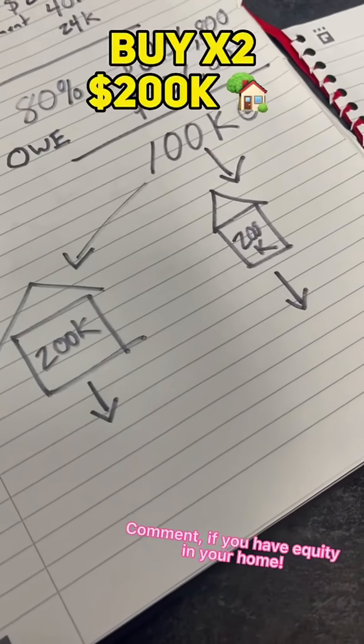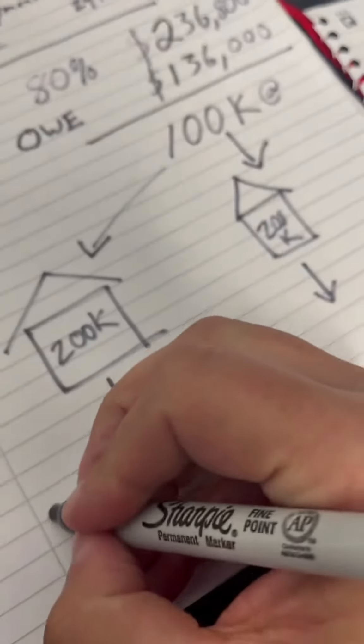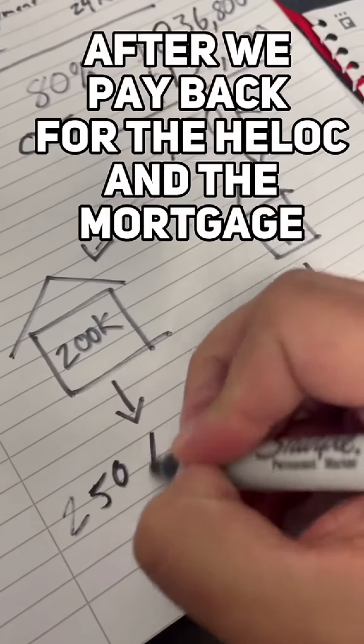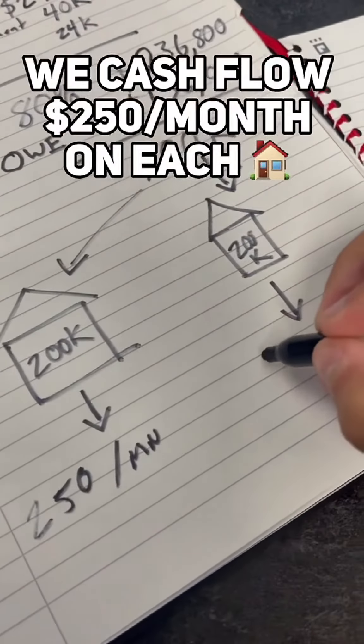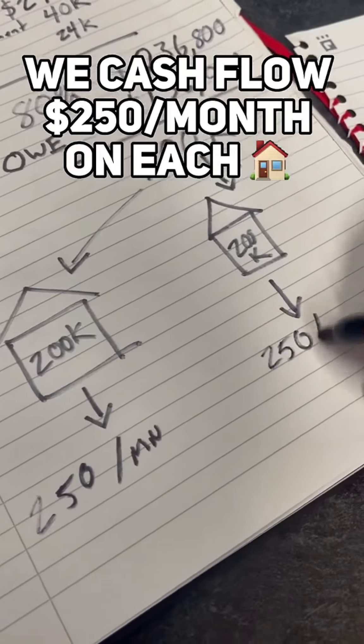We take that $100,000 and we purchase two $200,000 properties. Rent these out. After we pay back for the HELOC and the mortgage, we still cash flow about $250 per month on each of them.